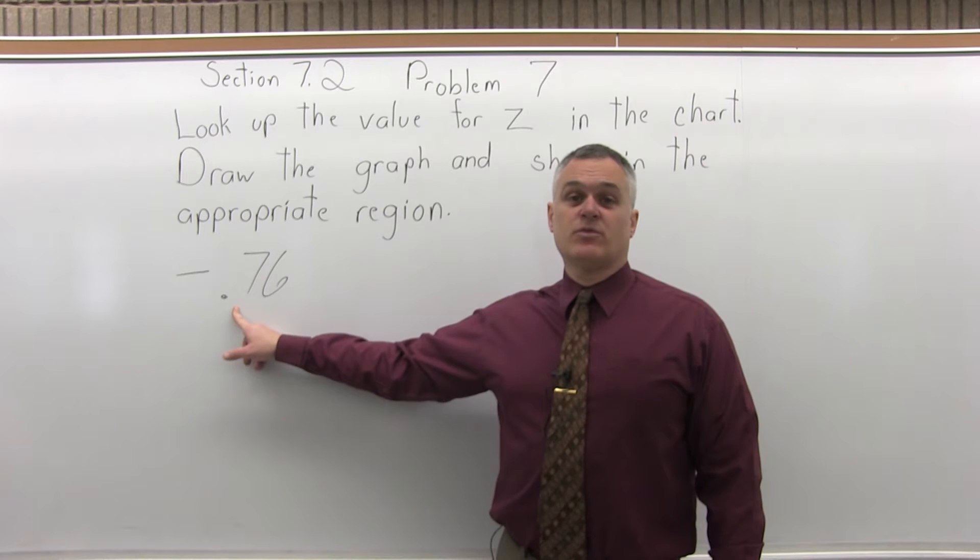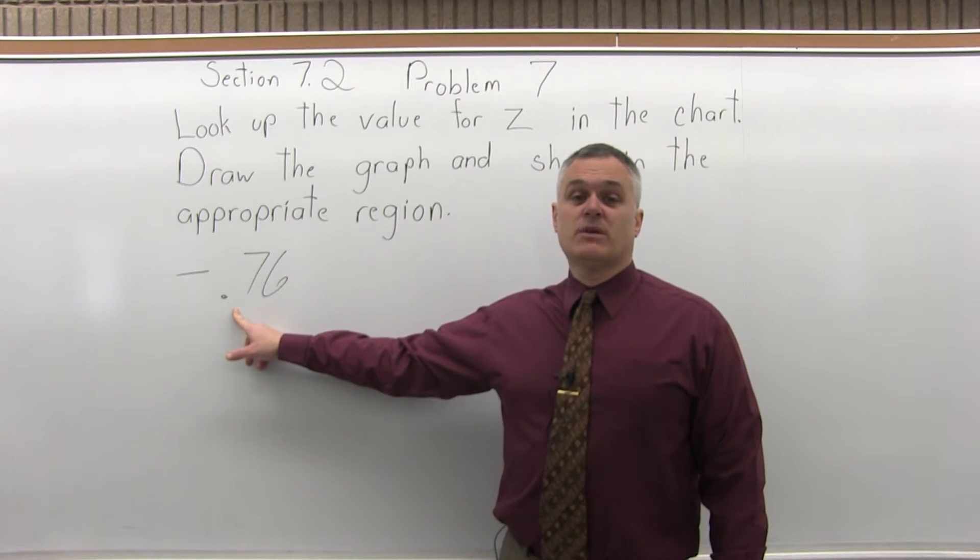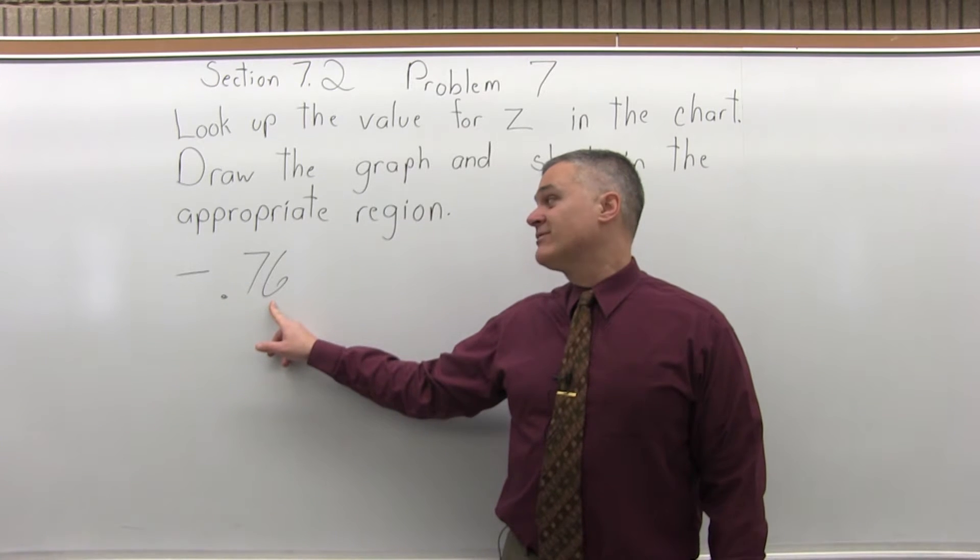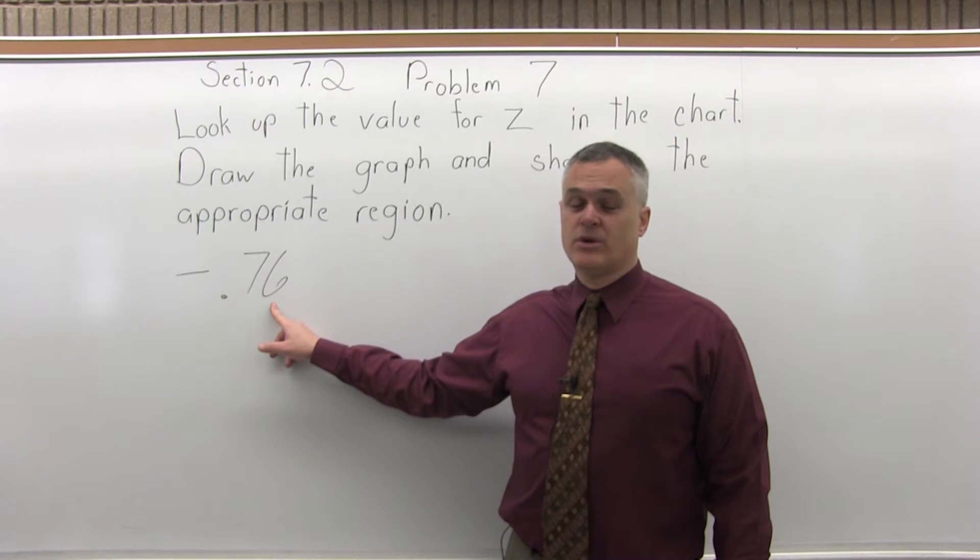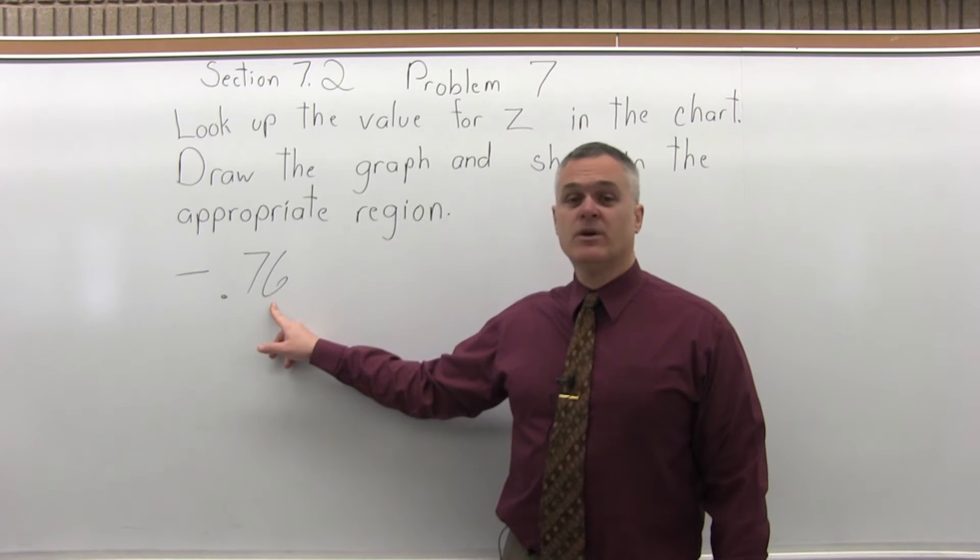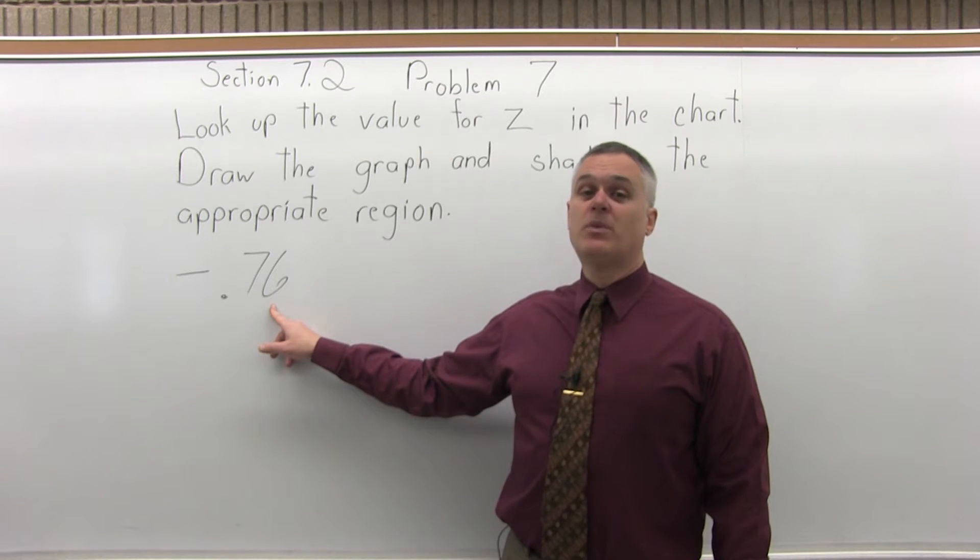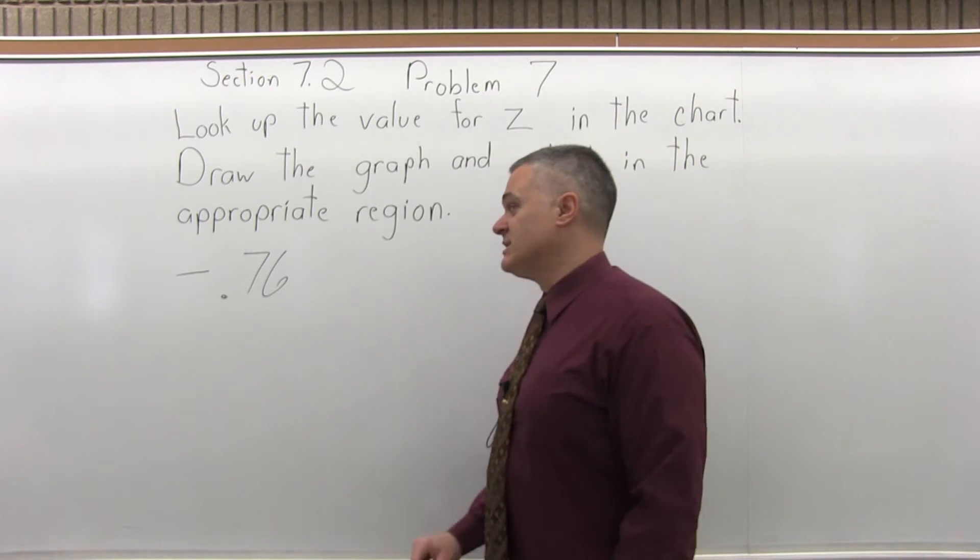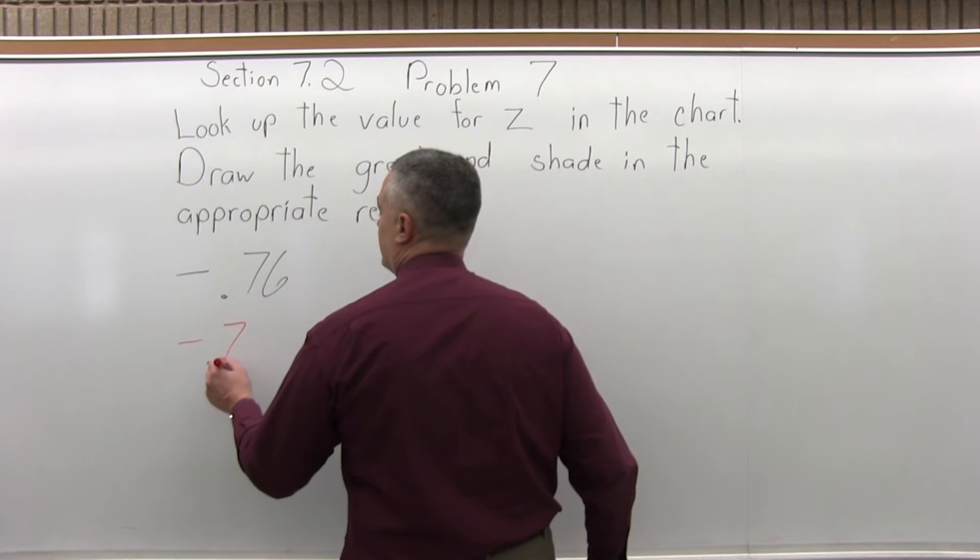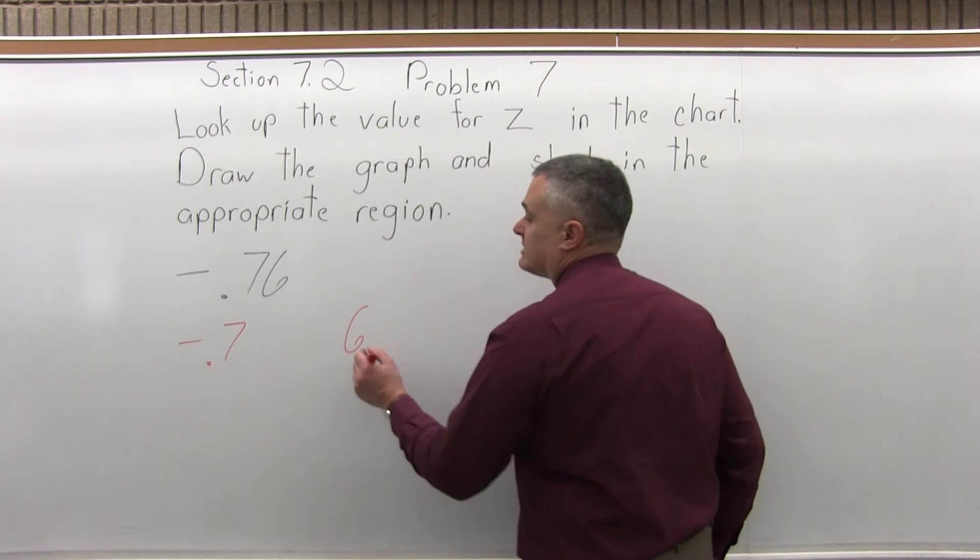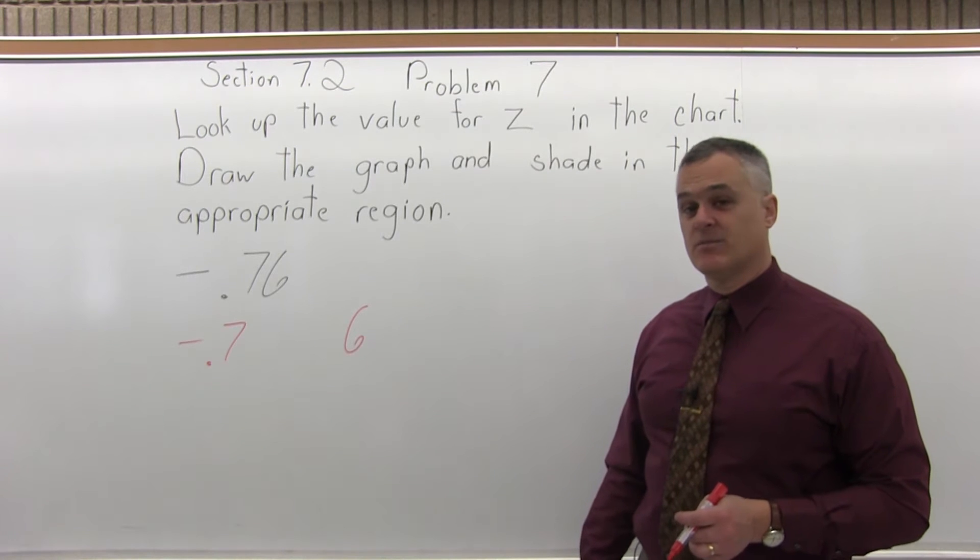So to look up negative .76, we follow a four-step process. Step one is write the number to look up so that it has two places after the decimal. This one already has two places after the decimal. We don't have to round it or put in a zero or anything. We're ready to go. So we move on to step two. Step two says split the number to look up into two parts by pulling off the rightmost digit. The six is the rightmost digit, so we're going to do negative .7 and six. So the rightmost digit, the six, we've pulled it off and split the number into two parts.